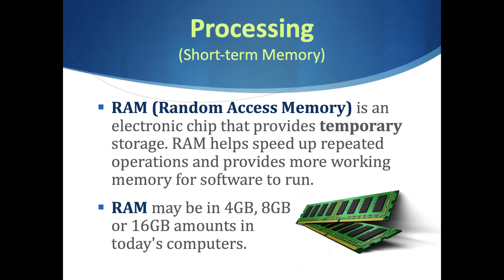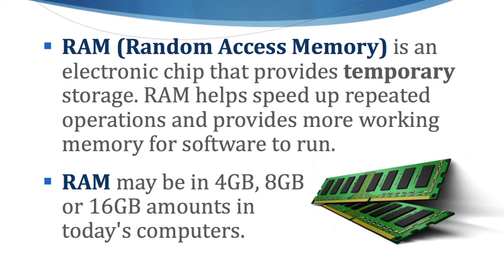If the processor is the brains of the computer, then RAM is the short-term memory. RAM, or random access memory, is temporary storage that speeds up instructions between the hard disk and the processor. It comes in 4, 8, 16, or even 32 GB increments. The more RAM you have, the more operations you can run, the more software you can have open at one time, and the more efficiently your operating system will function. You can never have too much RAM — it's always a good investment to get as much as you can when purchasing a computer.